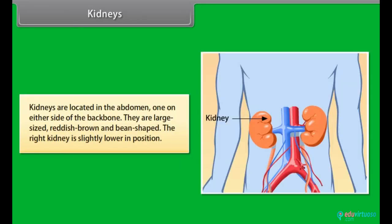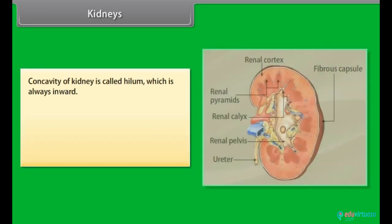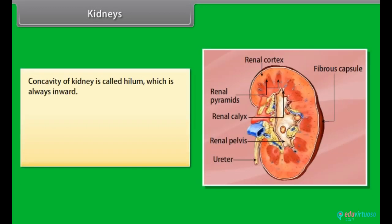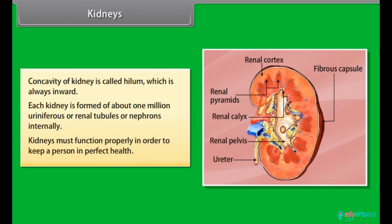Kidneys are located in the abdomen, one on either side of the backbone. They are large-sized, reddish brown, and bean-shaped. The right kidney is slightly lower in position. The concavity of the kidney is called the hilum, which always faces inward. Each kidney is formed of about 1 million uriniferous tubules or nephrons internally.